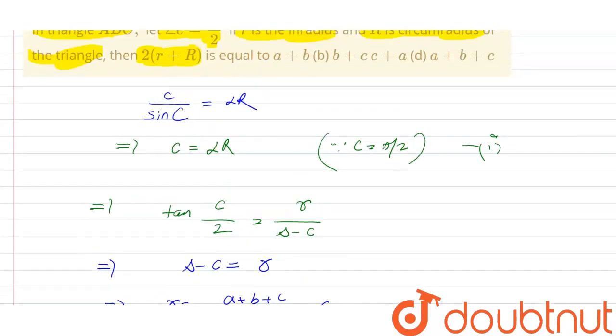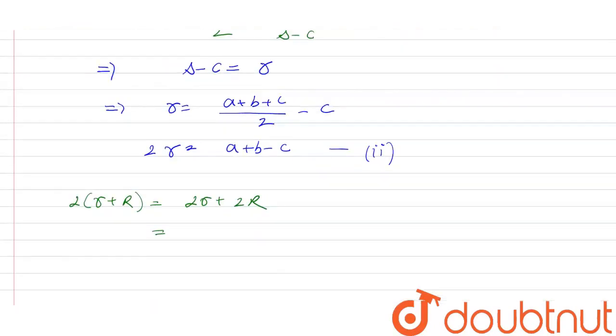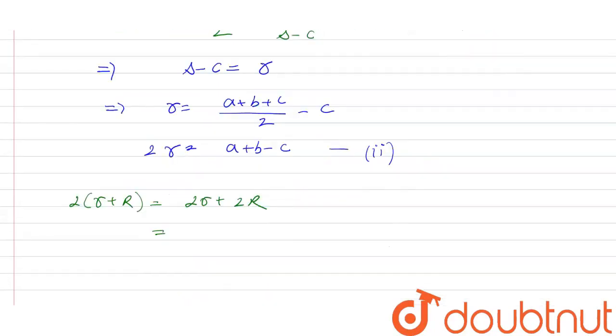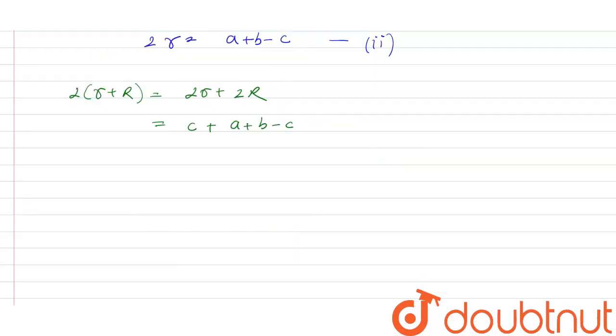Equation 1 is 2R equals c. So 2R plus 2r equals c plus 2r, which is c plus (a + b - c)/2. The c terms cancel, so we are left with a plus b. This is our answer, the value of 2 small r plus capital R.